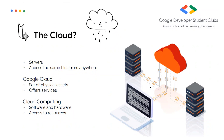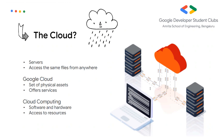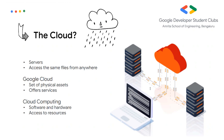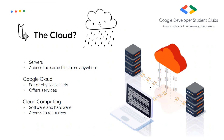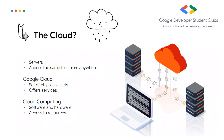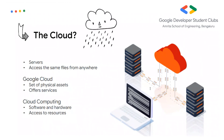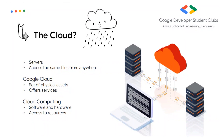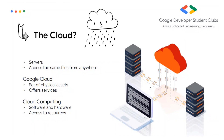The Google Cloud consists of a set of physical assets, such as computers and hard disks, and even virtual resources like virtual machines. These are contained in Google's data centers across the globe. In cloud computing, what you might think of as software and hardware products become services, and these services provide access to the underlying resources.